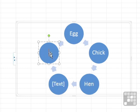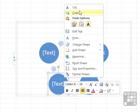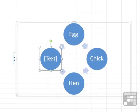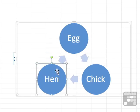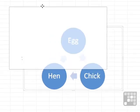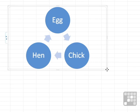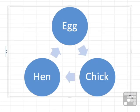The cycle continues: the chick becomes a hen, which then lays an egg. We don't need the two extra boxes, so to remove a shape you simply right-click and choose Cut, or make sure you've selected the border rather than the text and press the Delete key. The shapes resize themselves to fit within the drawing area, and you can move and resize the whole shape as well.